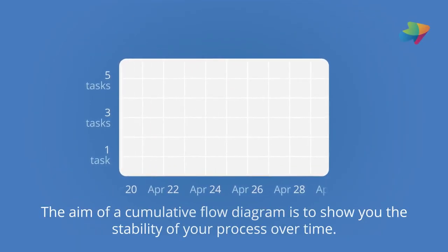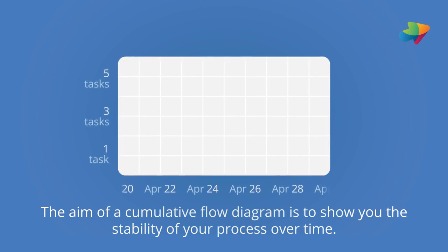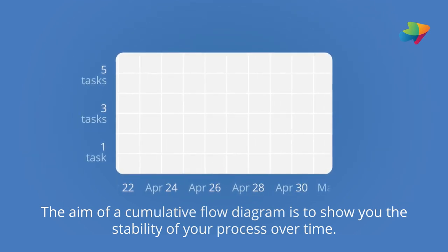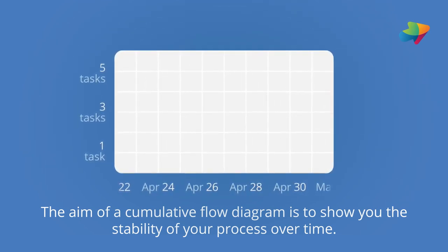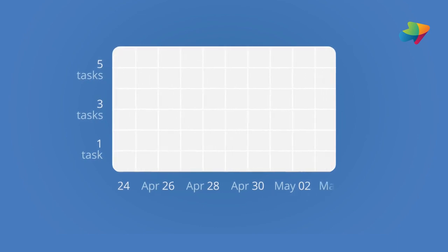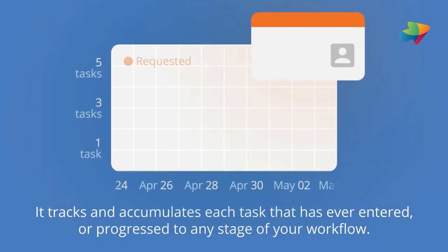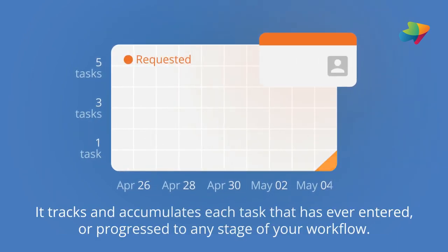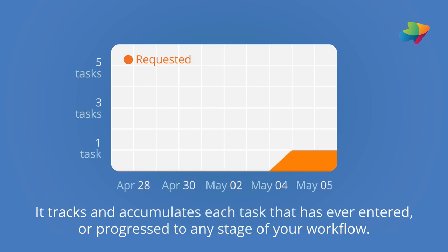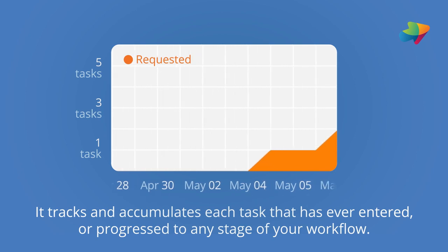The aim of a cumulative flow diagram is to show you the stability of your process over time. It tracks and accumulates each task that has ever entered or progressed to any stage of your workflow.